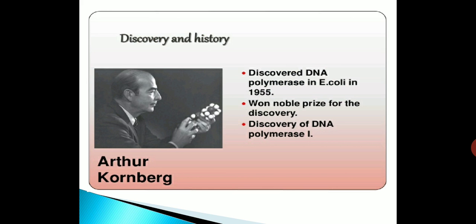Now we will discuss the discovery and history. DNA polymerases were discovered in Escherichia coli in 1955, and for this discovery — specifically the discovery of DNA polymerase 1 — Arthur Kornberg received the Nobel Prize.